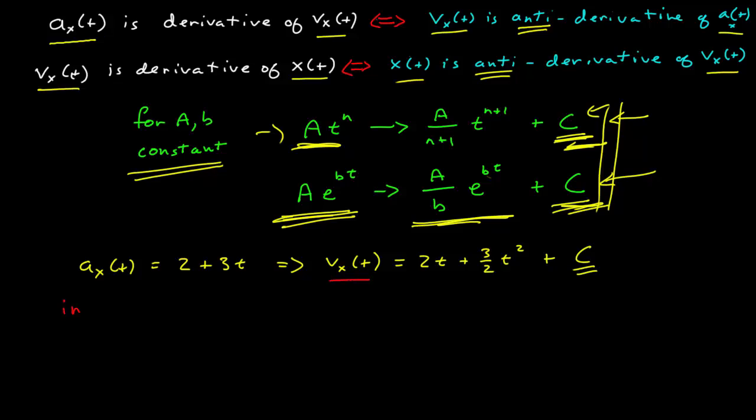Remember, when we defined this before, the initial condition is the velocity at t is equal to 0. We often gave this its own label, v subscript x0. So this is a physical parameter, it is the velocity of the object at the time is equal to 0.